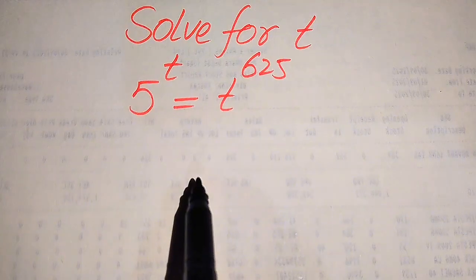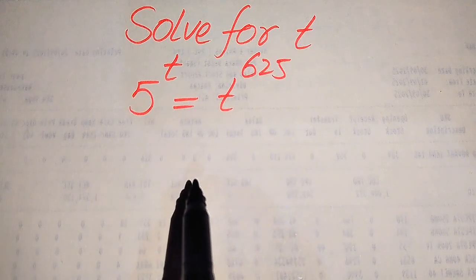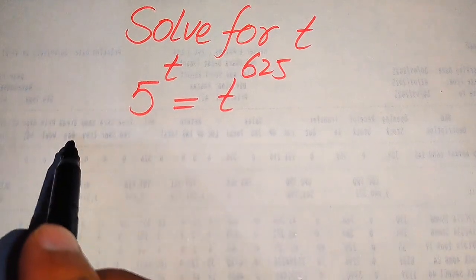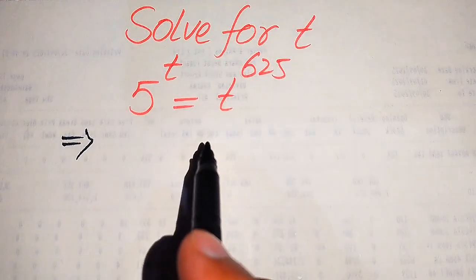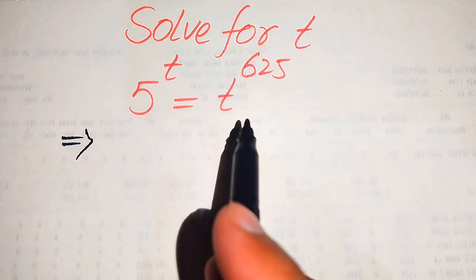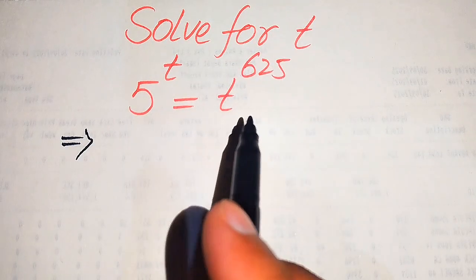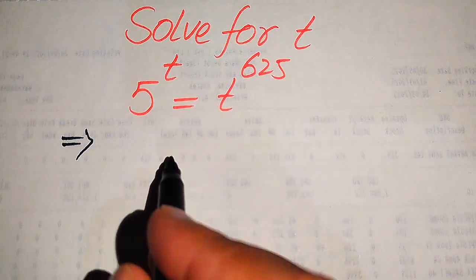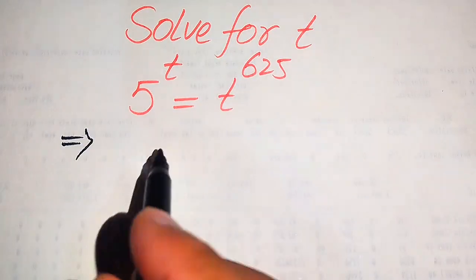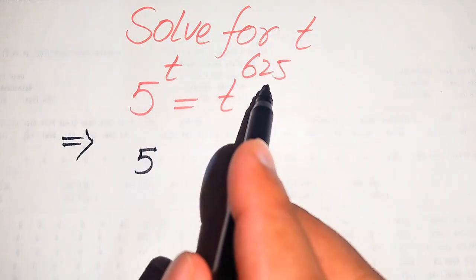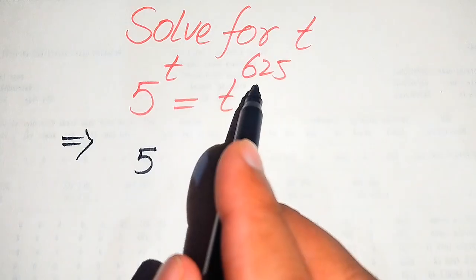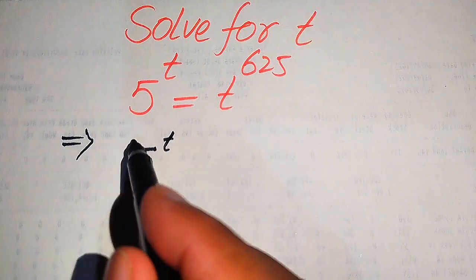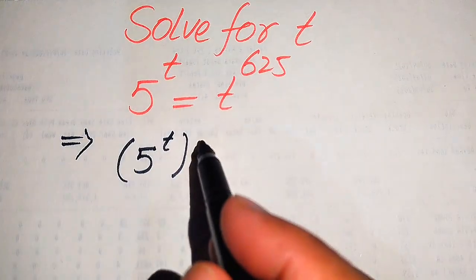I hope you like this method, but if you have any other method in your mind, please don't hesitate to write it into the comment section. Now we move towards the solution. The very first thing we are going to do is move the variable terms to the right hand side and the constant terms to the left hand side. For this we need to move the 625 to the left hand side, so we take the 1 over 625th root on both sides.